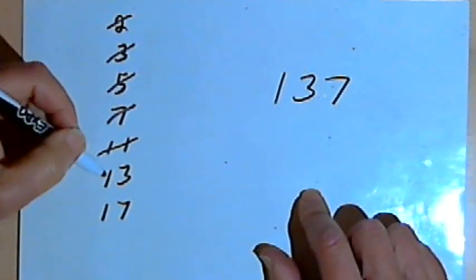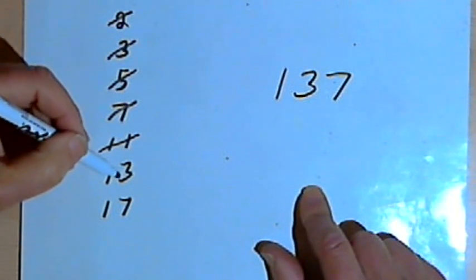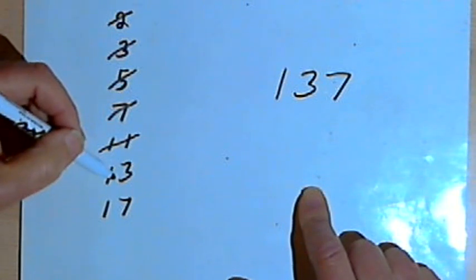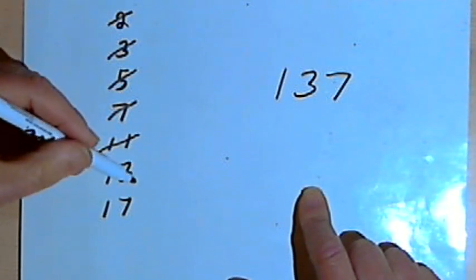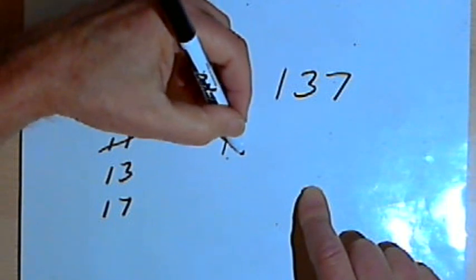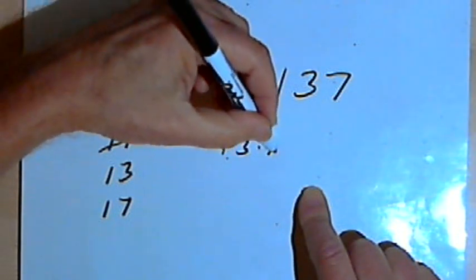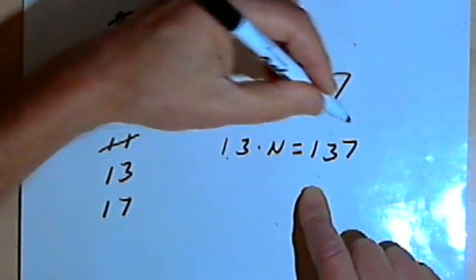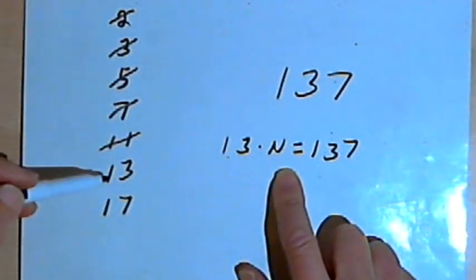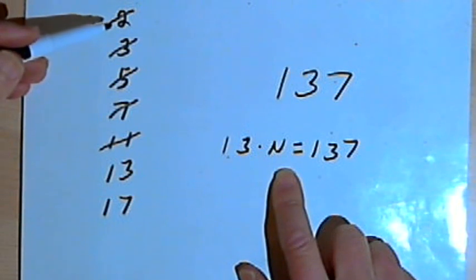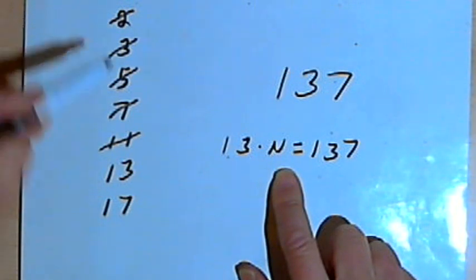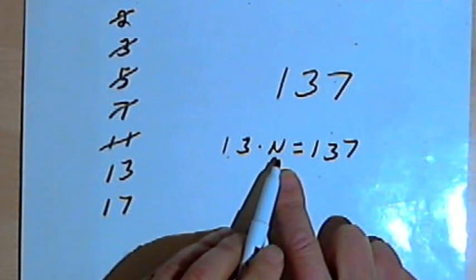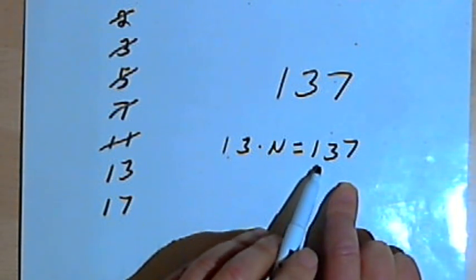Let's say that 13 was a factor of 137. So that would mean 13 times some other number would equal 137. So I could write 13 times n equals 137. Now n could not be any number smaller than 13, because I've tried all of them. So maybe n equals 13. Well, if n equals 13, that means 13 times 13 equals 137, but it doesn't.